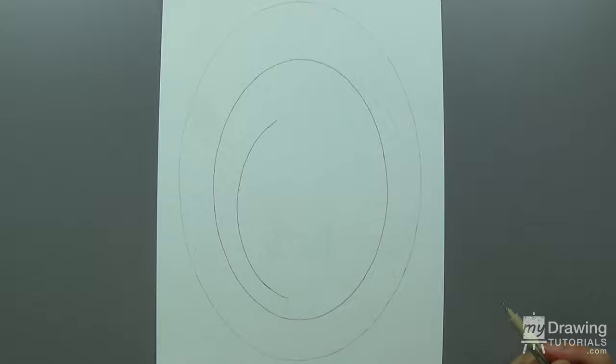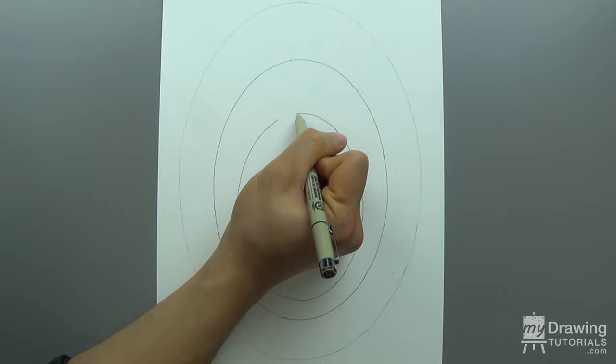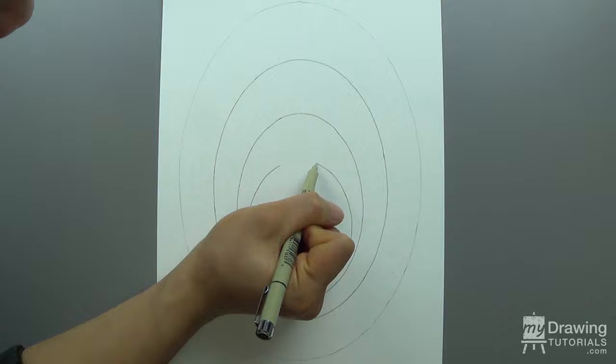Then draw another smaller ellipse inside this one. Again, you'll want to make it more rounded and place it closer towards the bottom. Repeat this process three more times.